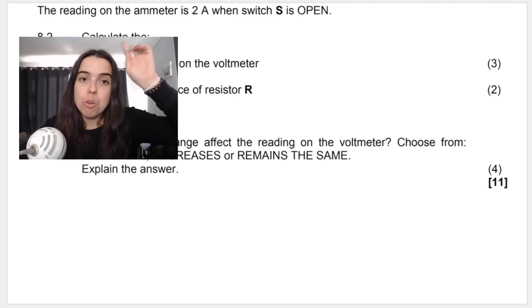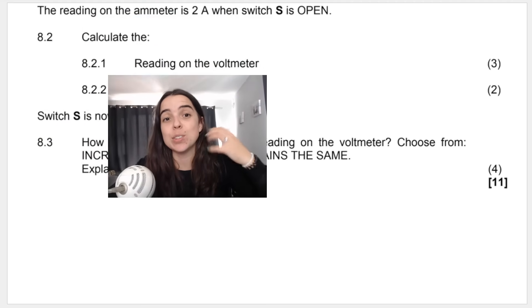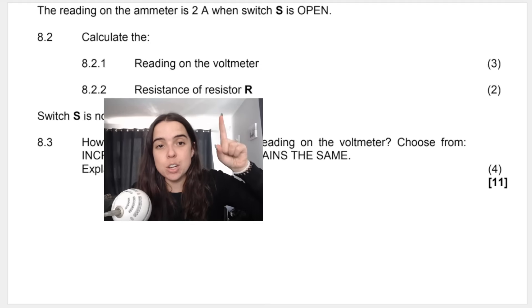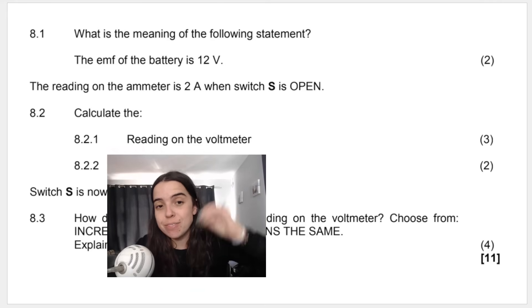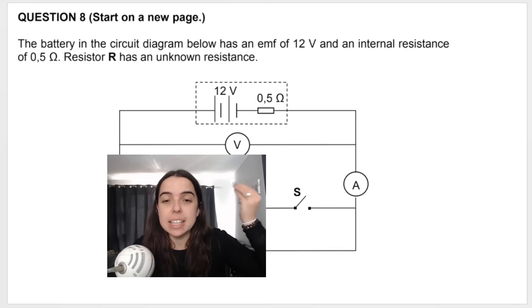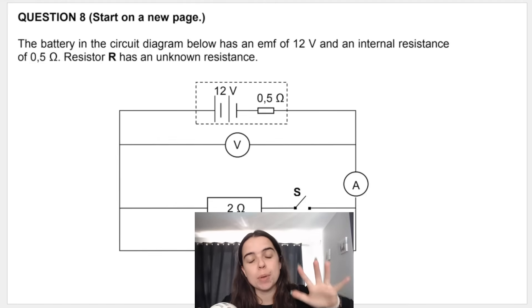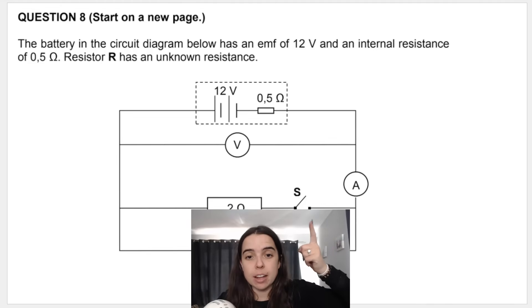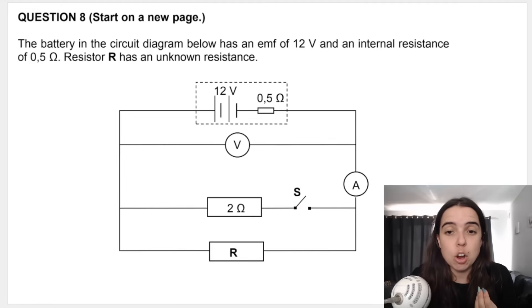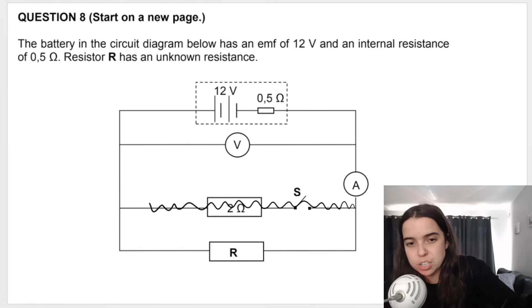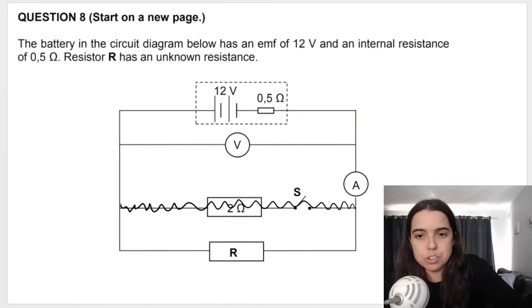Then there's another bit of information given to me. The reading on the ammeter is 2 amperes when switch S is open. They want us to calculate the reading on the voltmeter and then the value of resistor R. Firstly, looking at how to find the reading on the voltmeter, a quick reminder about where the voltmeter is connected. The voltmeter is connected here across the battery. So they say when the switch is open. Now, remember when the switch is open, that's not the main switch of the circuit. If I open that switch, what it does is it basically just makes this branch here useless. The current won't flow through that branch. That branch doesn't exist. So the current only flows through the battery down here and through this resistor. So it's a series circuit basically.